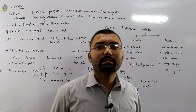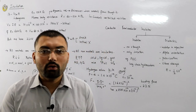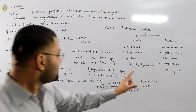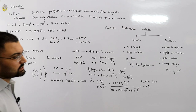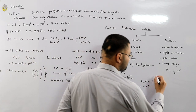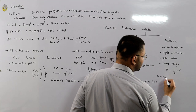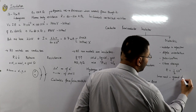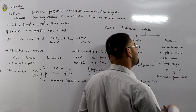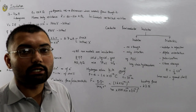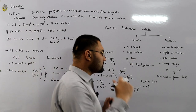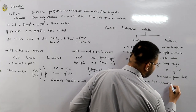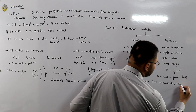This innermost shell is called the ground shell. Our interest, however, lies not in the innermost shell but in the outermost shell, which is called the valence shell.